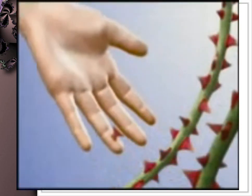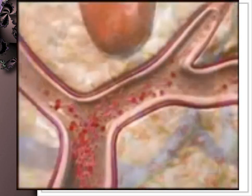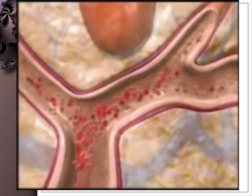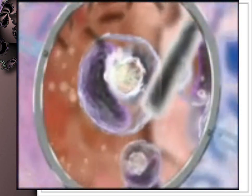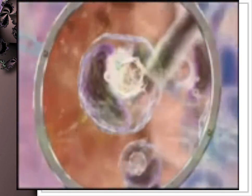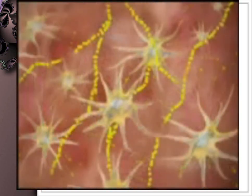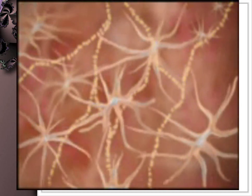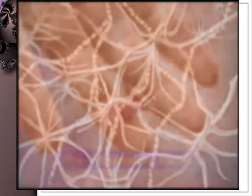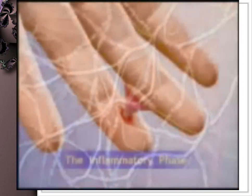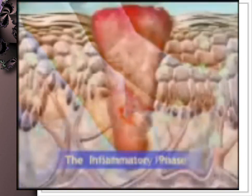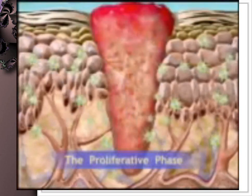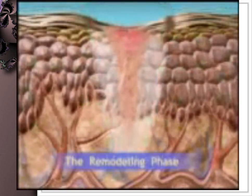Wound healing consists of filling the gap created by tissue destruction, followed by restoration of the structural continuity of the injured part, through three phases: the inflammatory phase, the proliferative phase, and the remodeling phase.